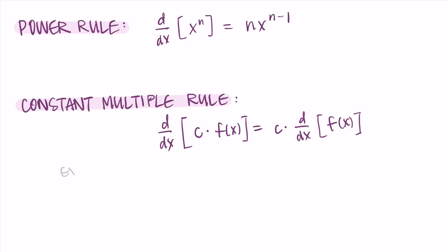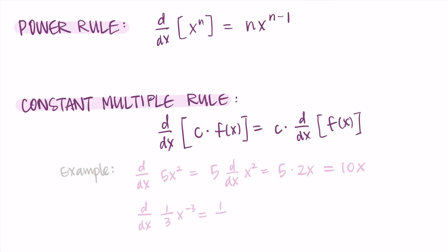Let's do some examples with the constant multiple rule. First, the derivative of 5x squared: we factor out the 5, keep it on the outside, and just focus on the derivative of x squared. Using the power rule, x squared gives us 2x. Then we multiply: 5 times 2x equals 10x. So the derivative of 5x squared is 10x. Next, let's take the derivative of one third times x to the negative third power. We factor out the one third and focus on the derivative of x to the negative 3.